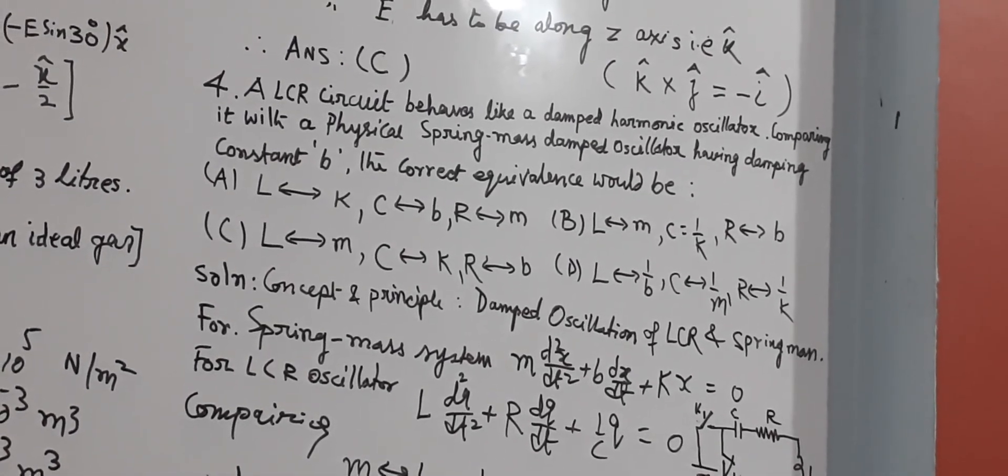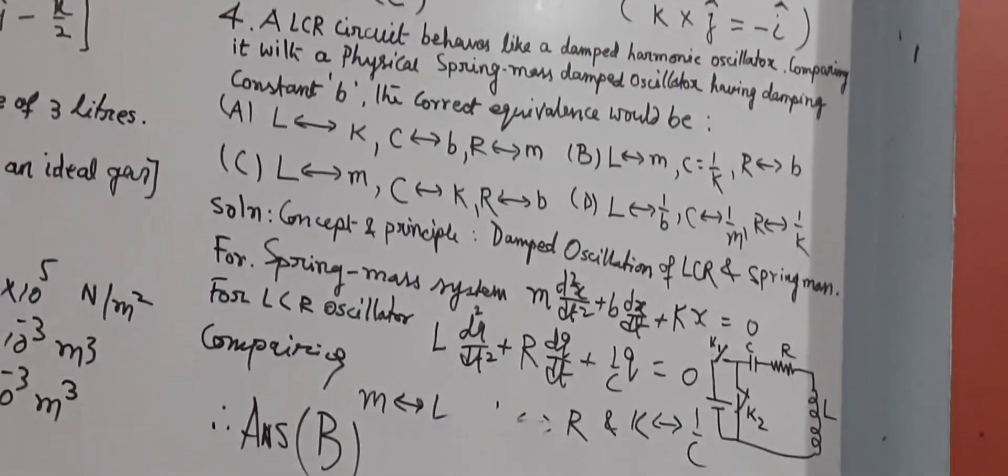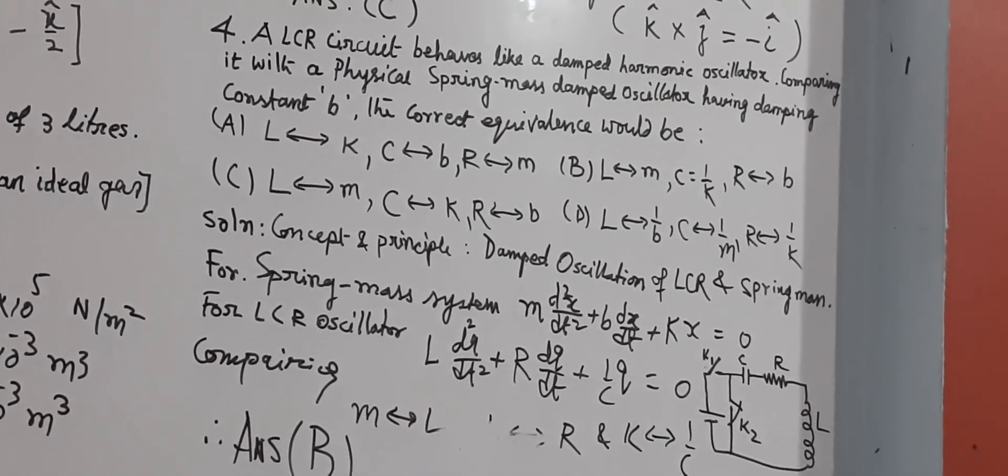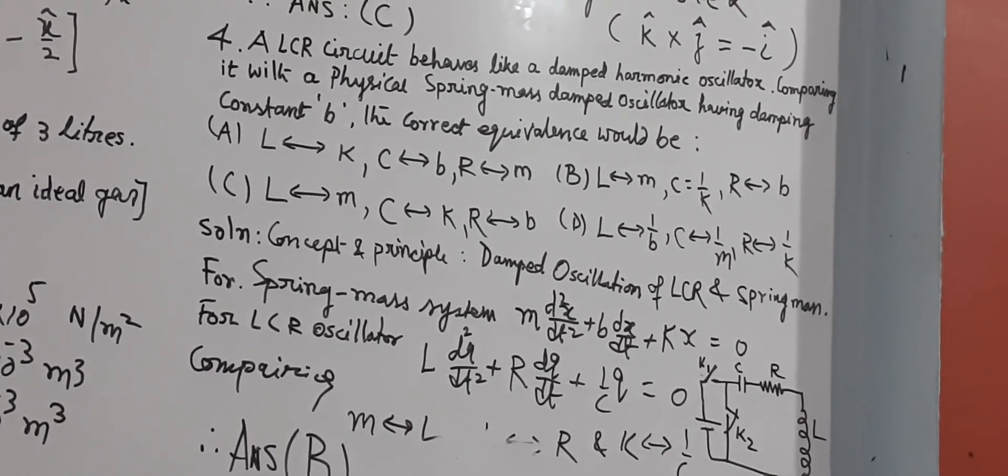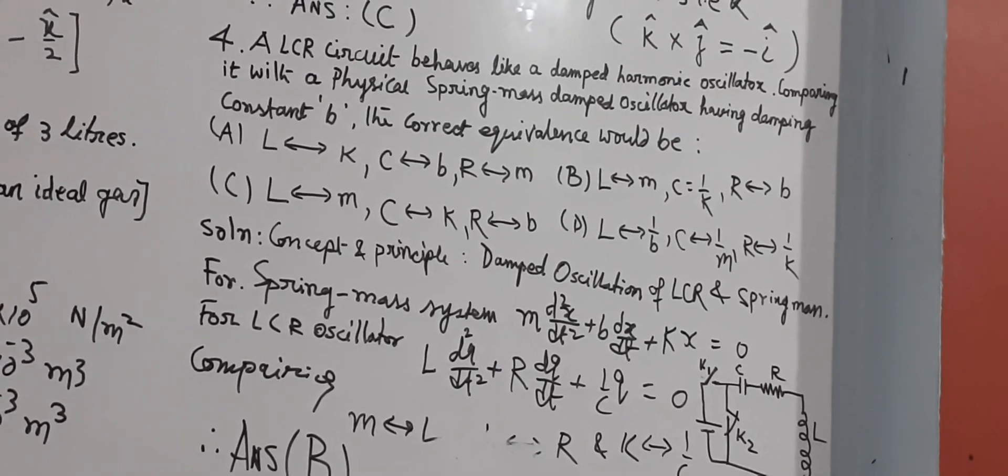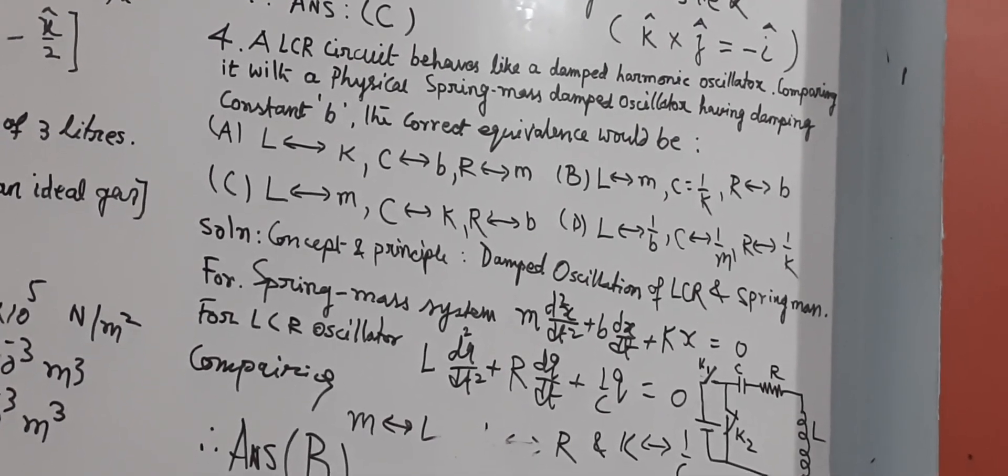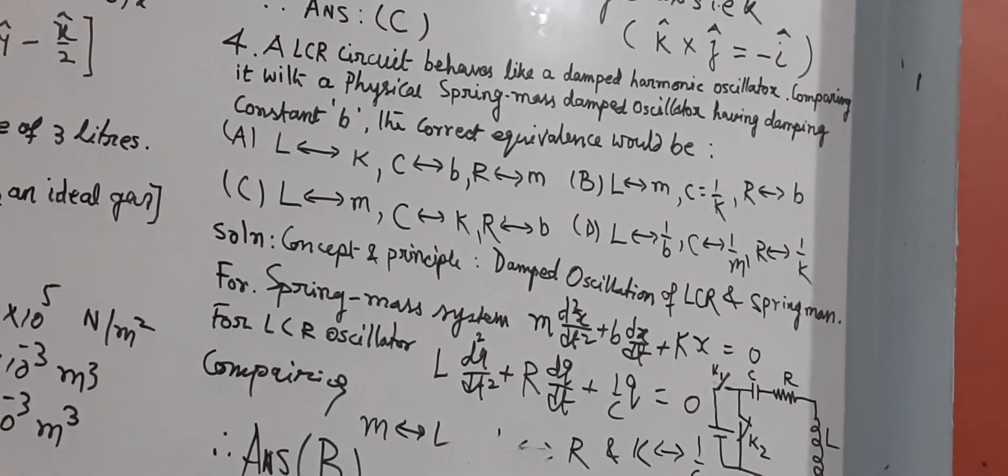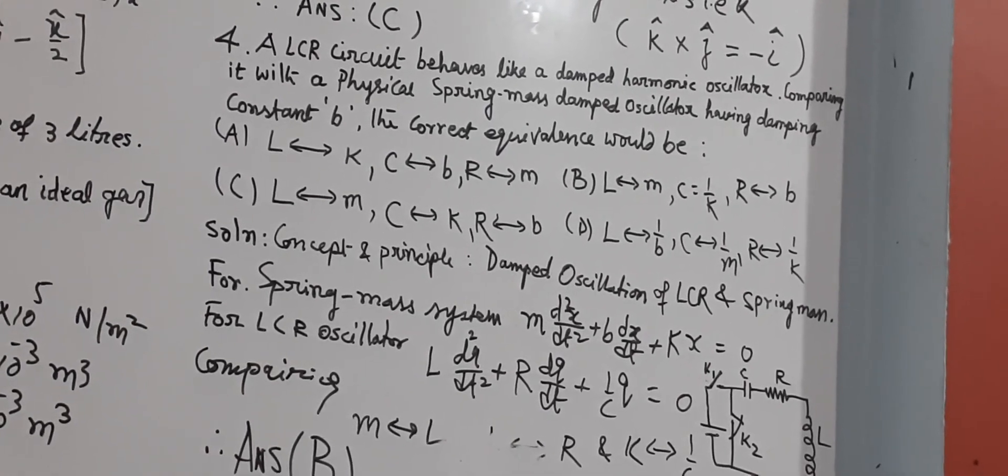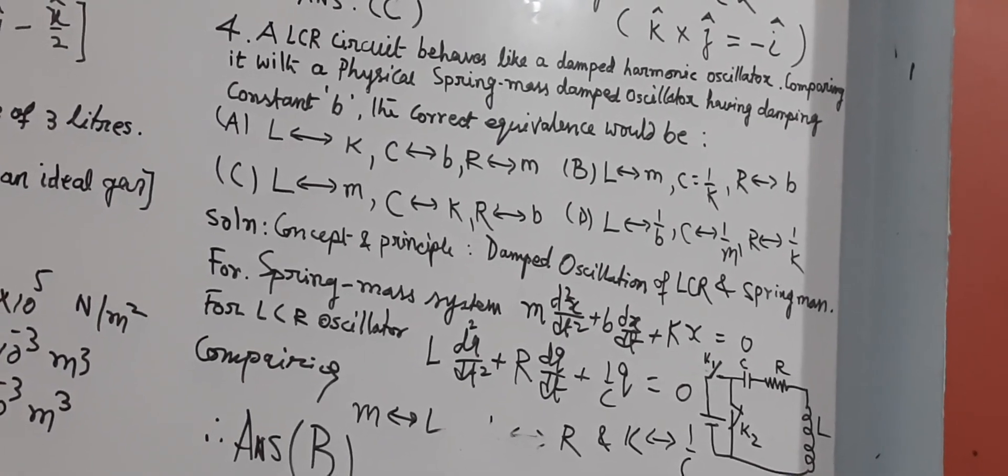Spring mass system, standard equation is M d2x by dt square, plus B dx by dt plus kx equal to 0, and for LCR circuit L d2q by dt square plus R dq by dt plus 1 by C q equal to 0, and equivalence will come, that is, it will match with B, option B.